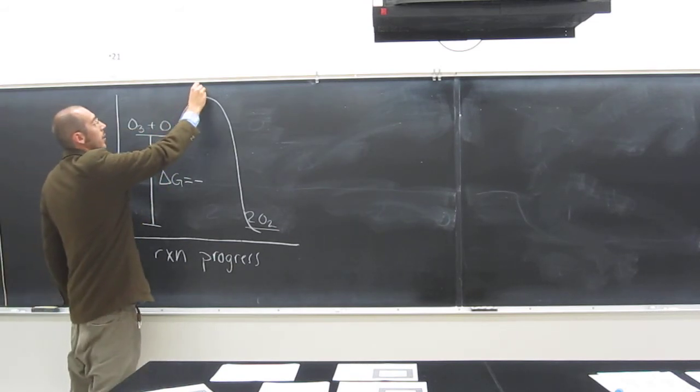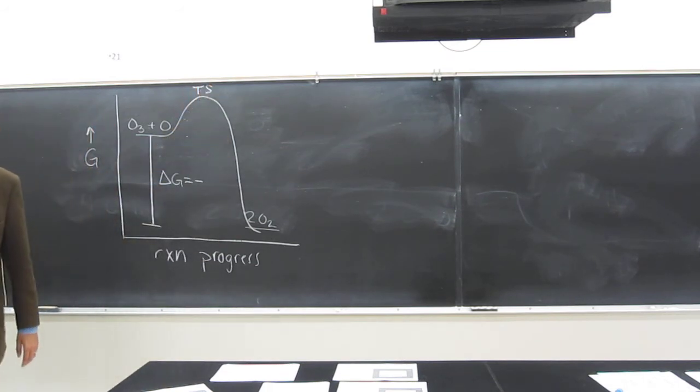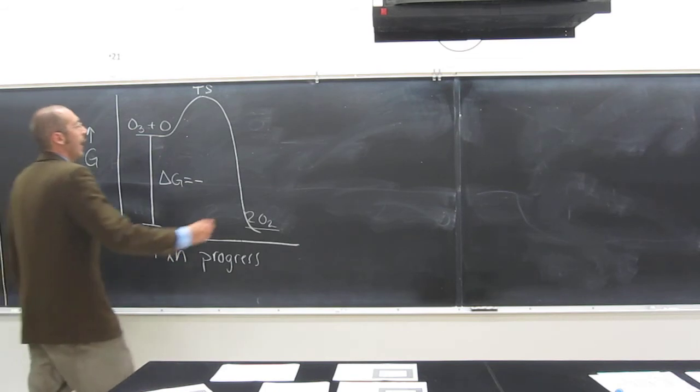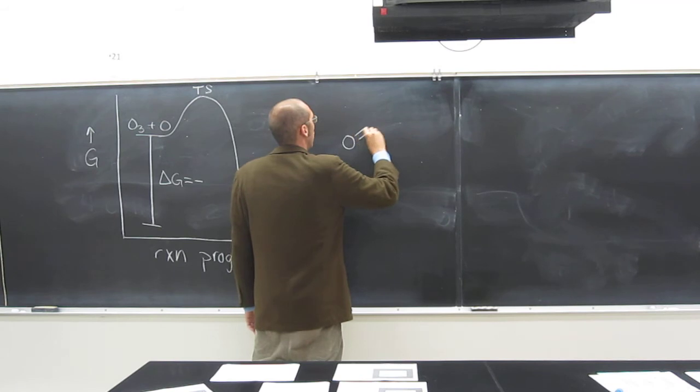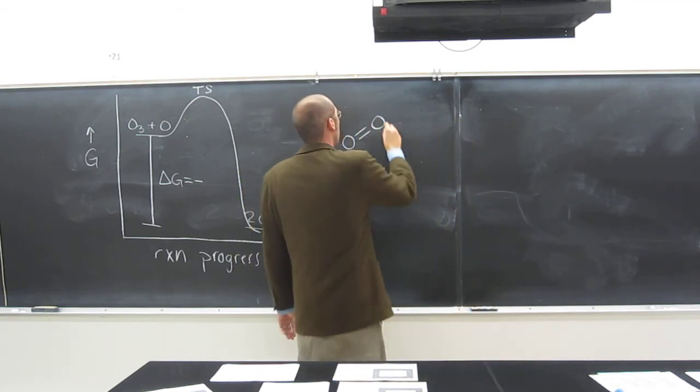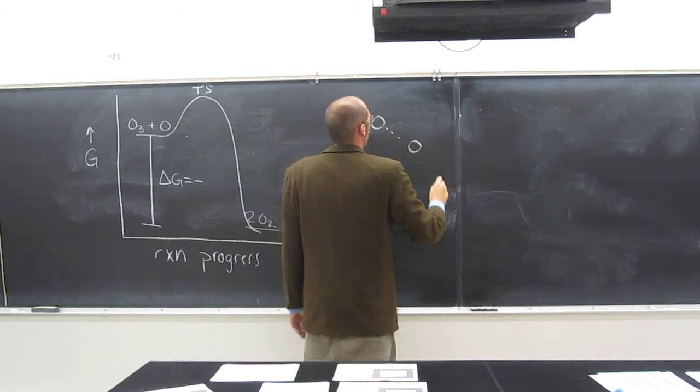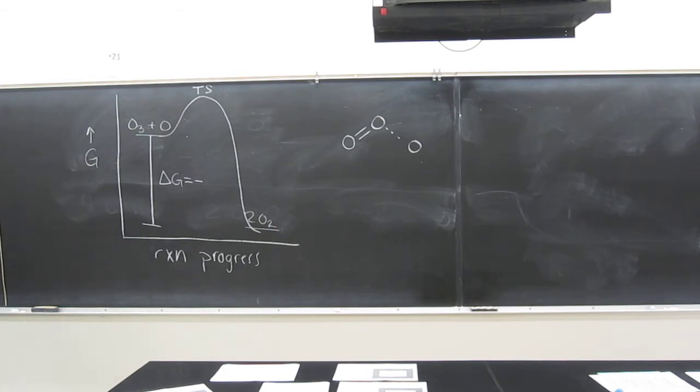So up here, we've got what's called the transition state. TS, or activated complex, some people will call it. And I guess it's drawn up there, you can kind of see it. I don't know, something like that.